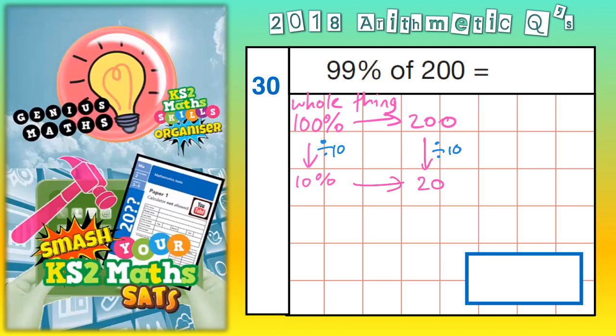Now we need to go down to 1%. So to get from 10% down to 1%, you are dividing by 10 again. So you divide by 10 again. 10% divided by 10 is 1%. And so you need to do the 20 divided by 10 again. So 20 divided by 10 is 2. So therefore, if 100% is 200, 10% is 20, 1% is 2.